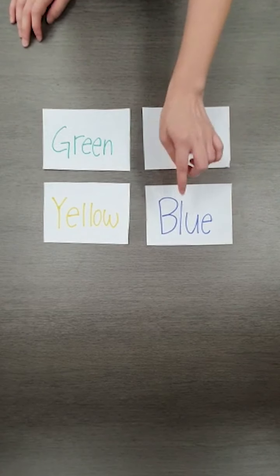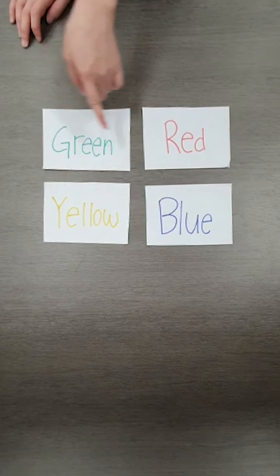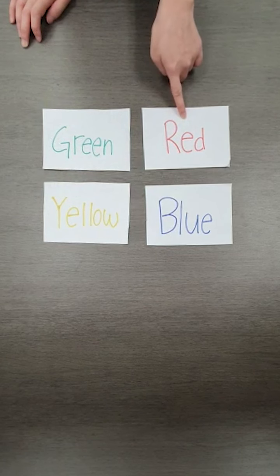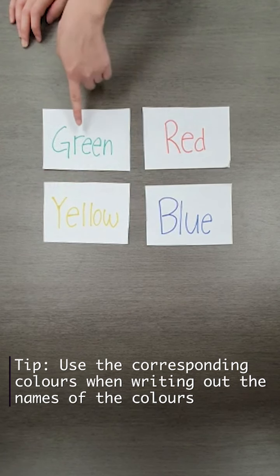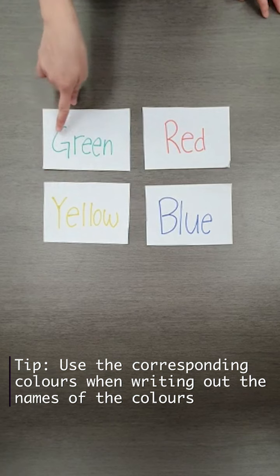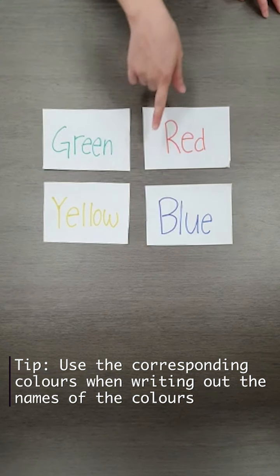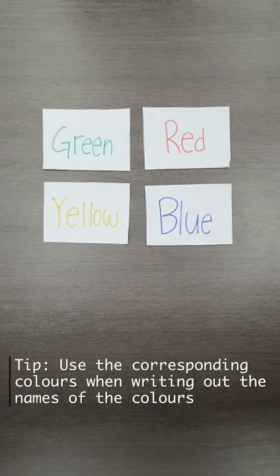So as you can see, I wrote blue, yellow, green and red. And try to use the same corresponding colours to the colour itself. So this way the children will be able to recognise which colour they are while even learning how to spell them.